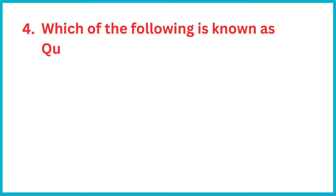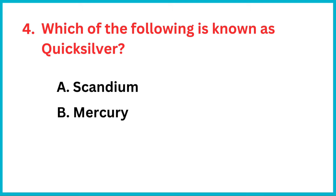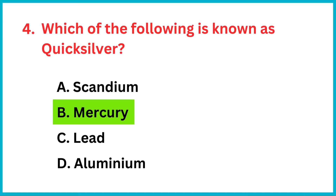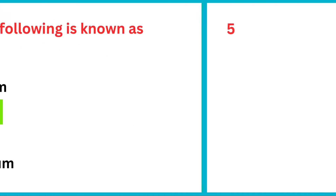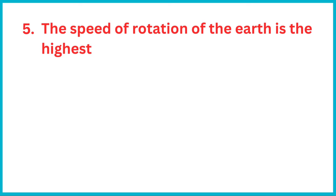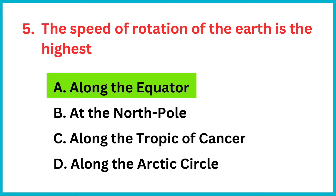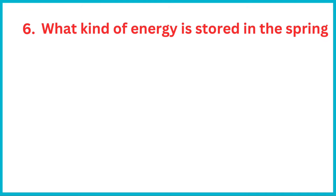Which of the following is known as quicksilver? The correct answer is option B: mercury. The speed of rotation of the Earth is highest at — the correct answer is option A — along the equator.